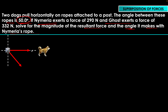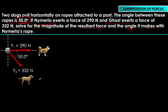So Nymeria's rope lies along the positive x-axis, with a tension force of 290 Newtons. Ghost is the second dog, and his rope is 50 degrees away from Nymeria's rope. The tension force along Ghost's rope is 332 Newtons. They are 50 degrees apart — that's all that matters, and this is our setup. This is a top view of the problem.